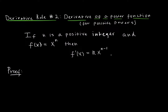This is the big one — derivative rule number 2, known as the derivative of a power function. Note that this is for positive powers for now; we'll talk about negative powers soon. If n is a positive integer — 1, 2, 3, 4, 5, 6, and so on — and f(x) is the function x raised to that power n, then the derivative of f with respect to x is n times x to the n minus 1. The exponent decreases by 1, from n to n minus 1, and you multiply by that power as the coefficient.